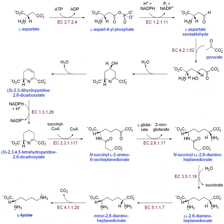Another variation involves simple compounds converted into other compounds with the assistance of cofactors. For example, the synthesis of phospholipids requires acetyl-CoA, while the synthesis of sphingolipids requires NADH and FADH for the formation of the sphingosine backbone. The general equation is: precursor molecule plus cofactor, via enzyme, yields macromolecule.